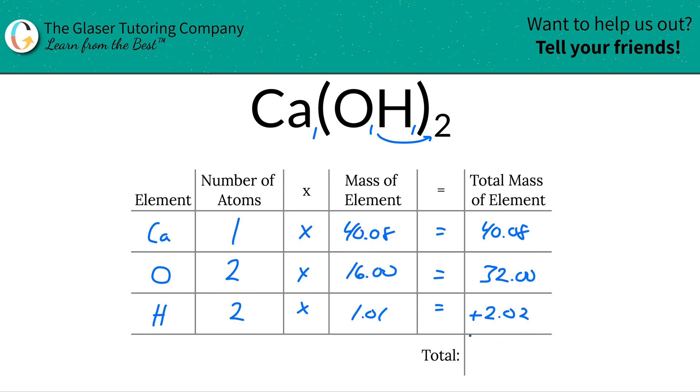To find now the mass in the entire compound, all you got to do, just add this column together now. Take all the total mass and add them together. So this works out to be about 74.10. So now this was the first step in finding that percent composition. We needed to first find the total mass. Now that we know the total mass, let's find the percents.